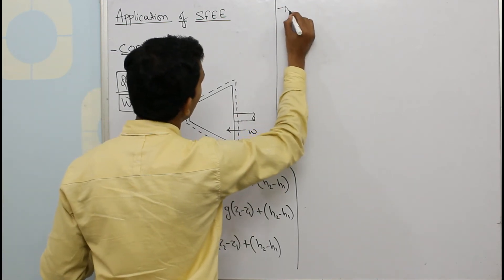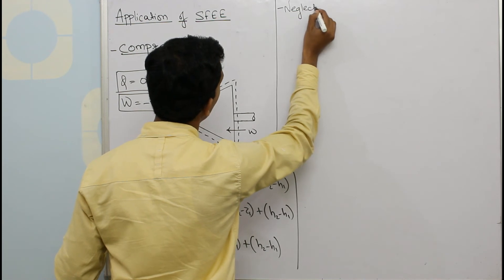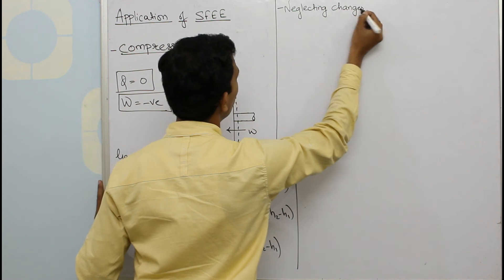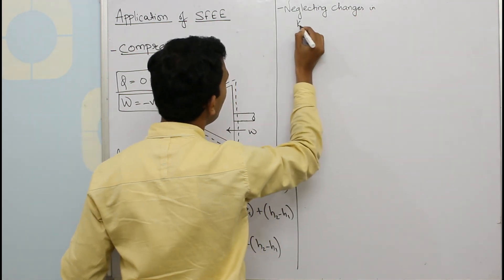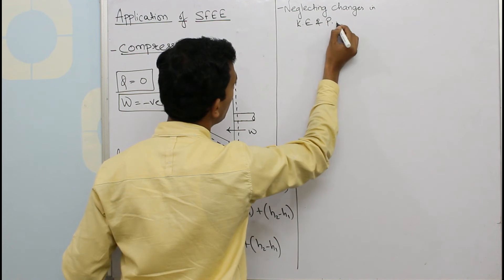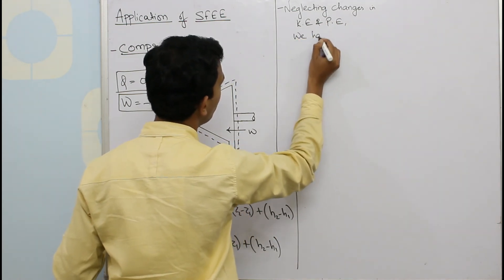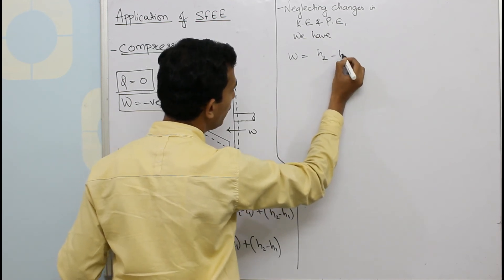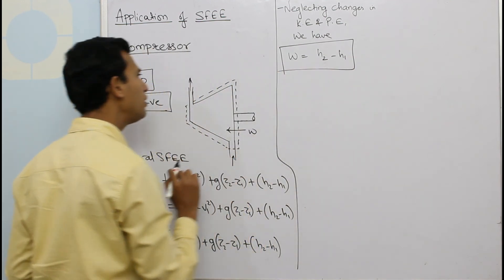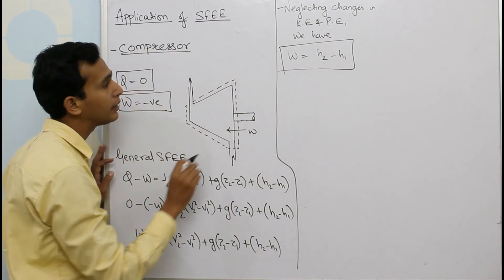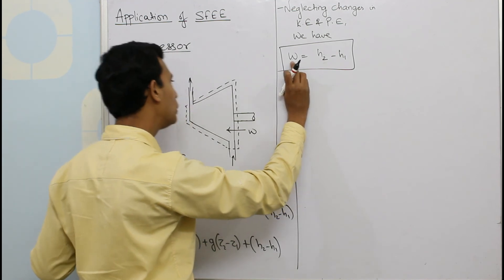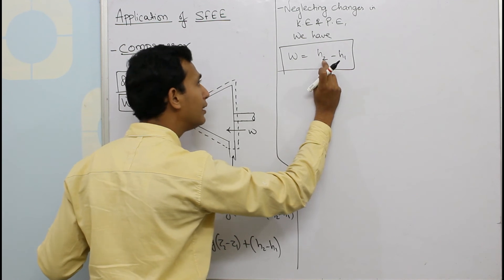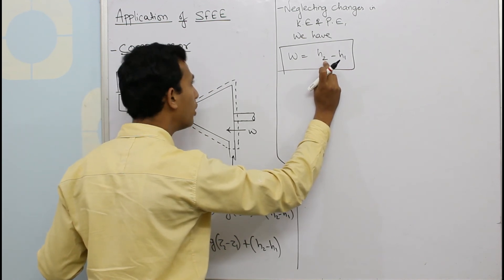So neglecting changes in kinetic energy and potential energy, we have W equals H2 minus H1. Now this equation gives us an idea that whatever work we have supplied to the compressor is used to increase the enthalpy of the flowing working substance.